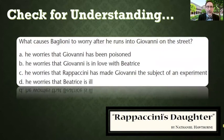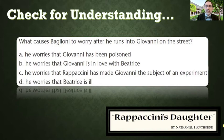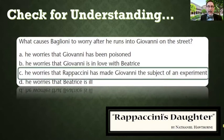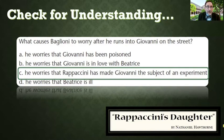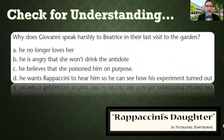What causes Baglioni to worry after he runs into Giovanni on the street? Baglioni is one of the professors at the college along with Rappaccini — Baglioni doesn't trust Rappaccini and warns Giovanni about him. What does he fear? He fears that Rappaccini has turned Giovanni into the subject of one of his experiments. And again — is science good or is science evil? We like to think of science as trying to do good, but there's always that idea of the experiment that is unethical, the experiment that goes too far.